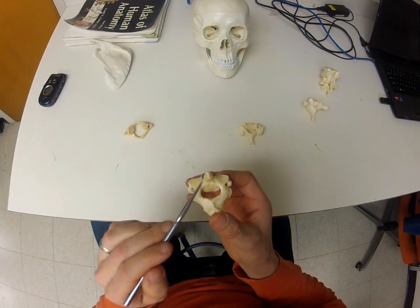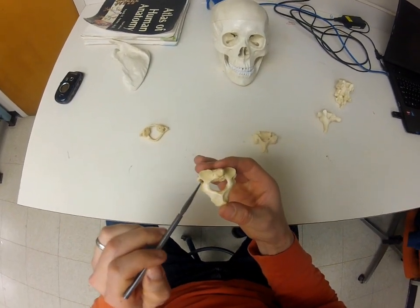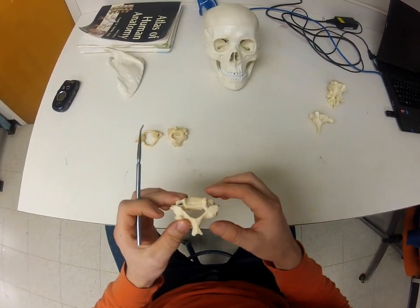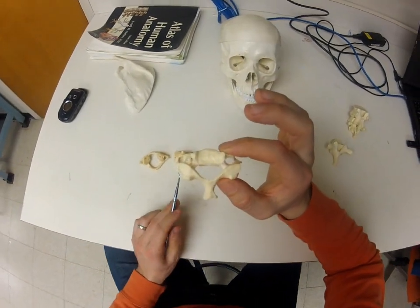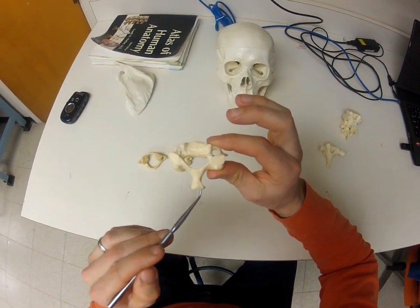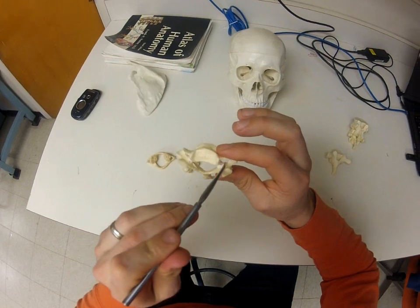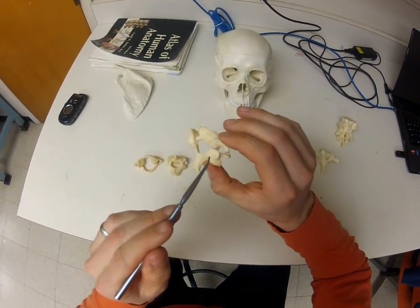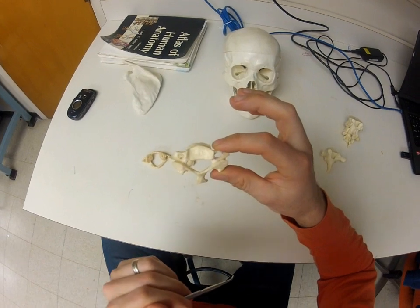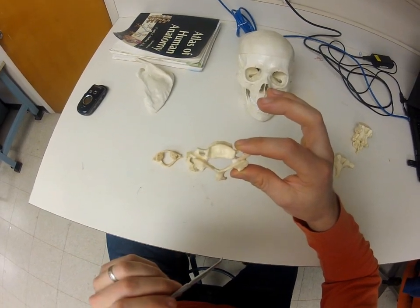C2 still has transverse foramen on either side. Moving down to a more typical cervical vertebra - C3 through C7 look more like this one. One feature is that the spinous process is forked, which we call a bifid spinous process. Most cervical vertebrae have that, along with the transverse foramen. We're also starting to see a much more defined body on the vertebrae.